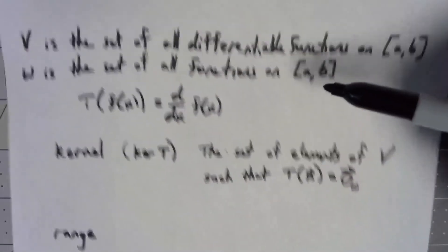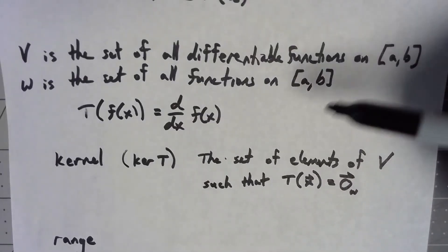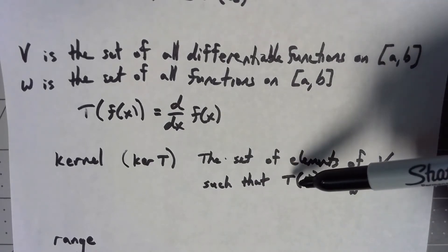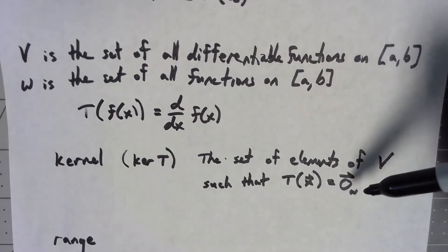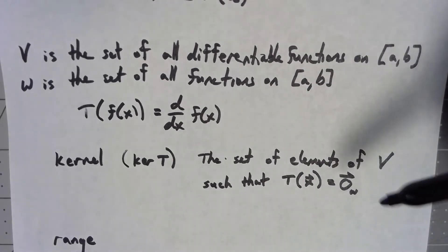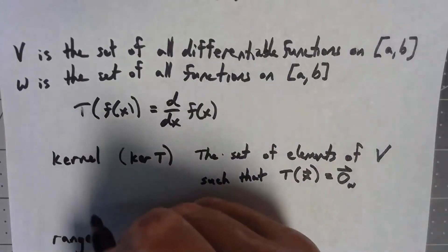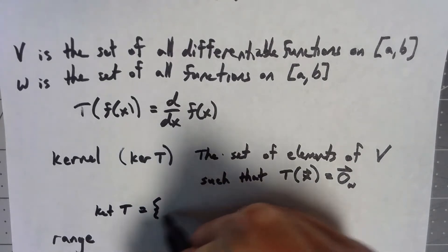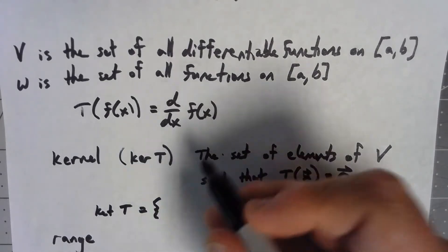With regards to this particular linear transformation, what this is saying is this is the set of all differential functions such that when I take the derivative, I get the zero function. Or in this particular case, the kernel of T is the set of all functions that are constants.